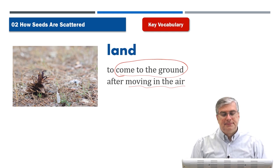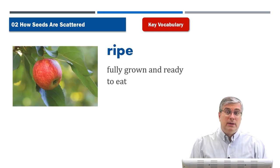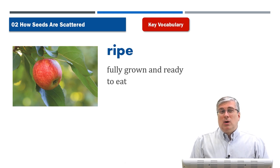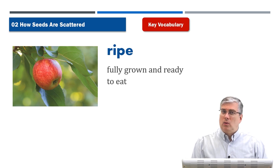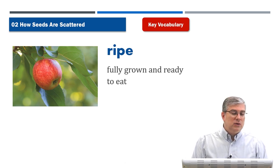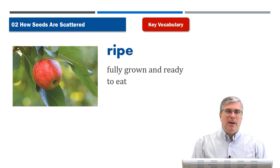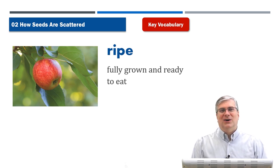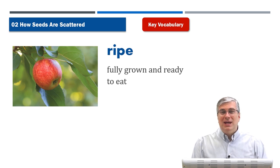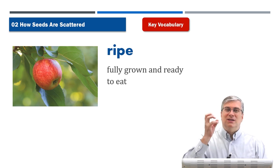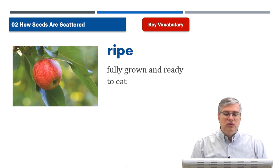'Ripe' is an important word, especially when eating fruit or vegetables. Ripe means fully grown and ready to eat. You don't want to eat an unripe apple — it doesn't taste very good. You want a ripe apple, a ripe orange, ripe corn — whatever the plant is that you eat, it should be ripe, meaning it's fully grown and ready to eat.